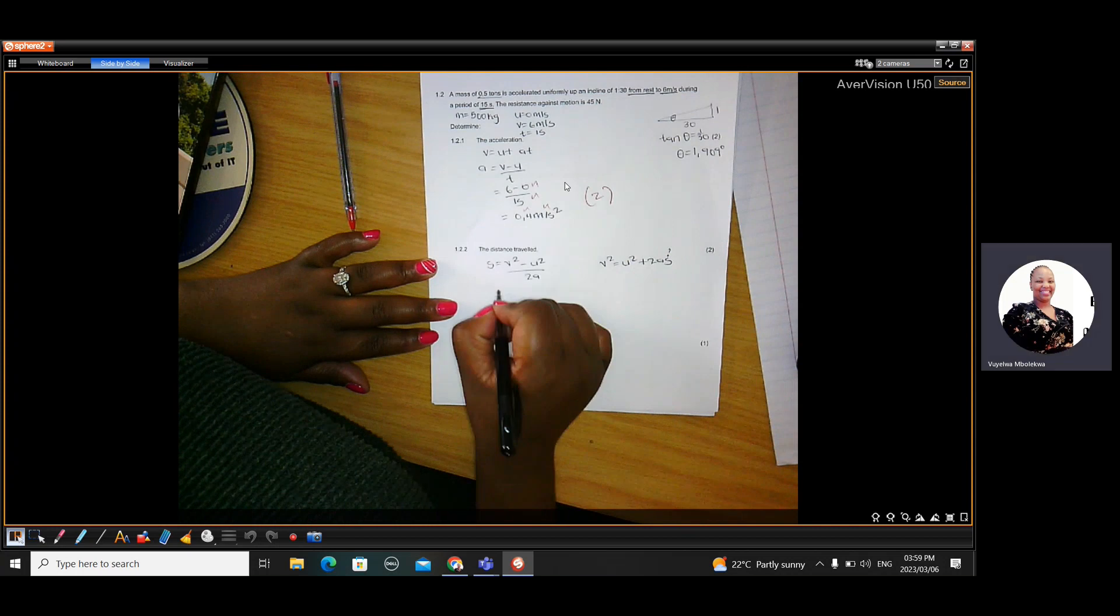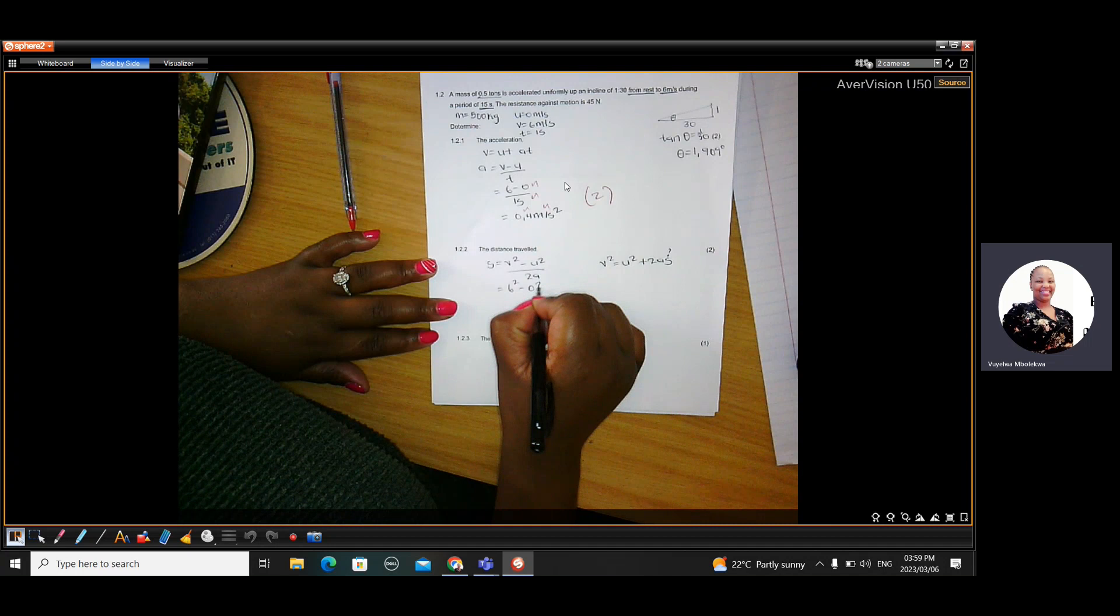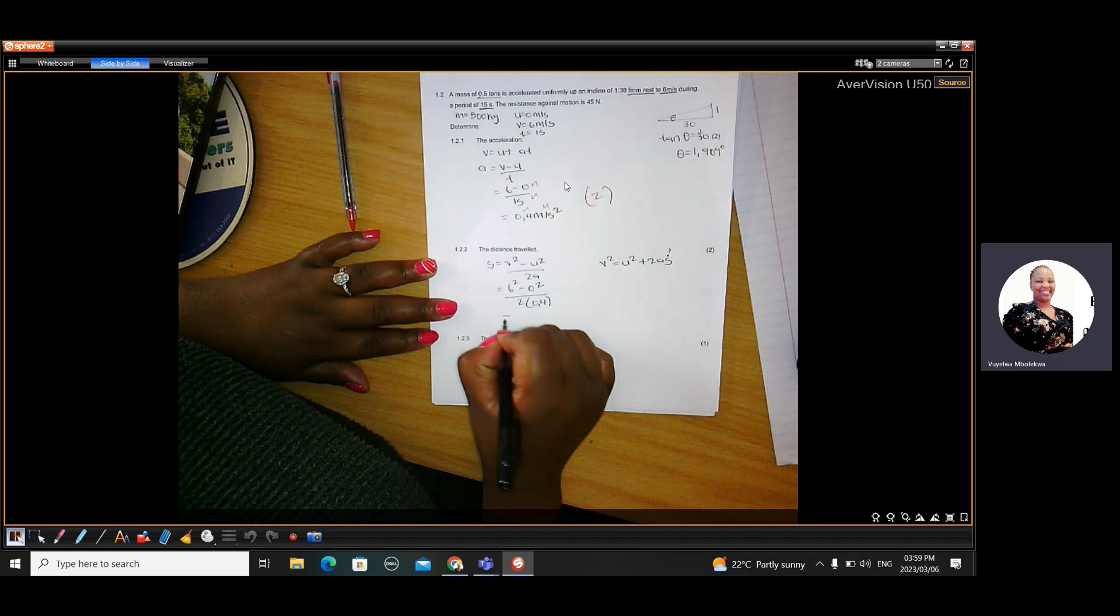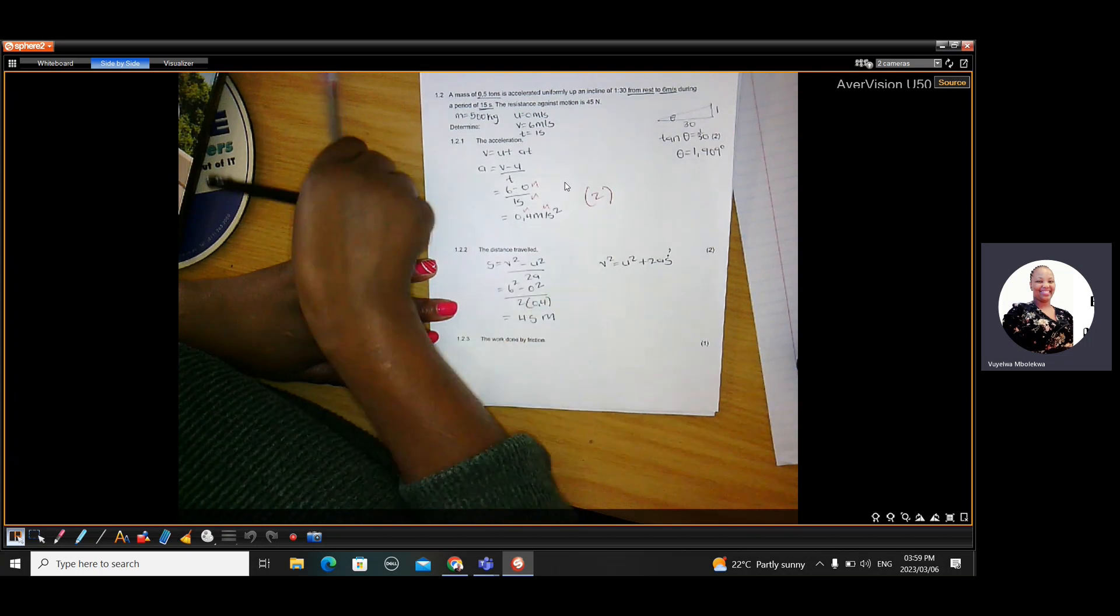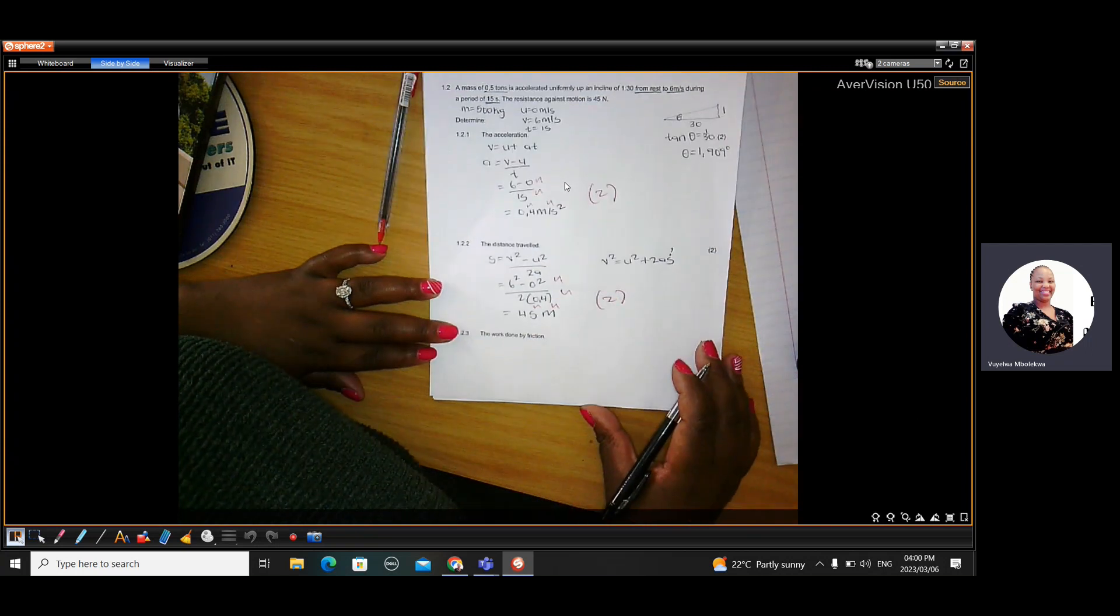So V is 6, we square that. U is 0, we square that. And then A is 0.4. So with all that done, you came to 45 meters. So which is again two marks. If your SI units are not there or they are incorrect, they will deduct half a mark.